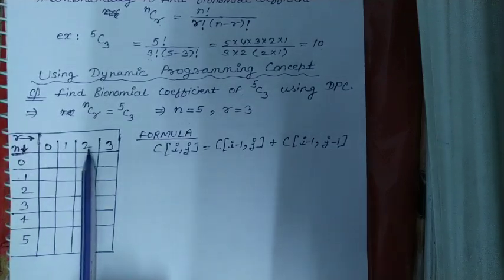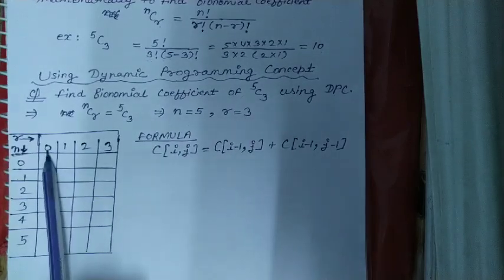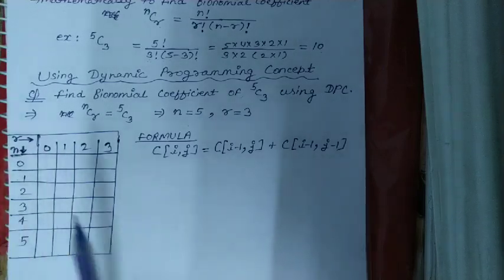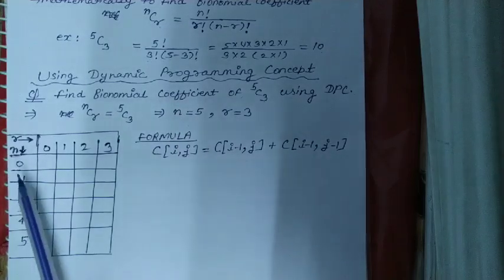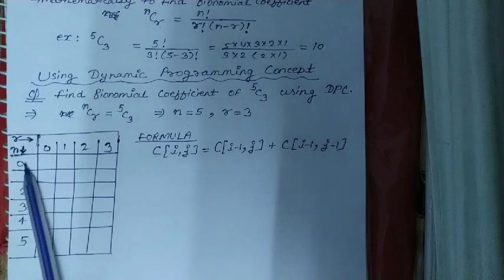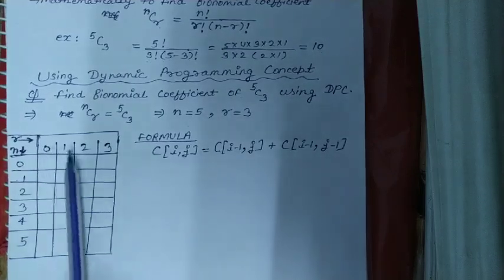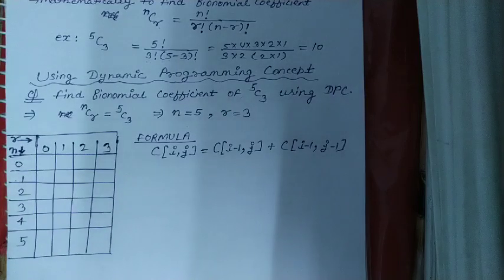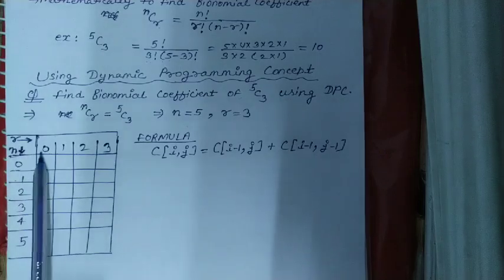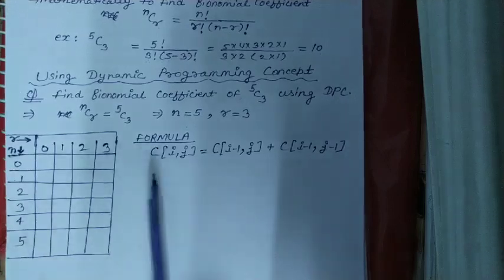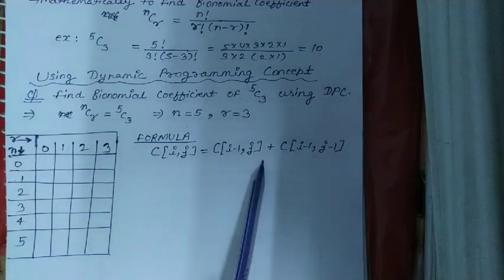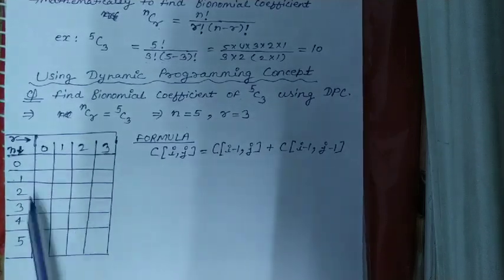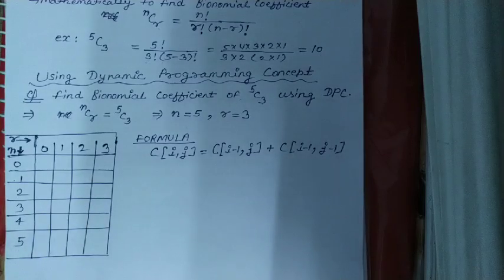How to draw the table: you have to write the R values starting from 0 up to 3. Remember, you must start from 0, not 1. Similarly for N, it will start from 0 and end at 5. R values are written along one axis and N values along the other. This is a shortcut method to fill the table; then we will use the formula to compute all values.